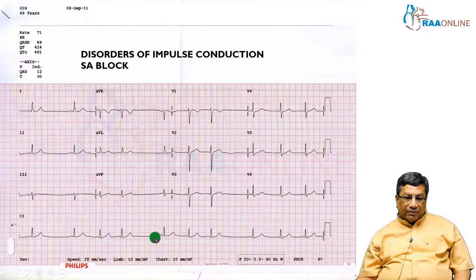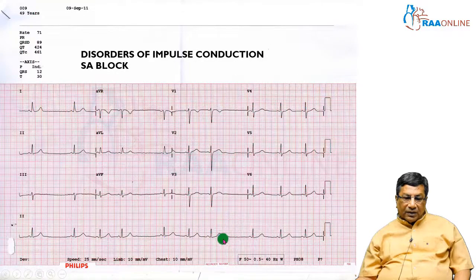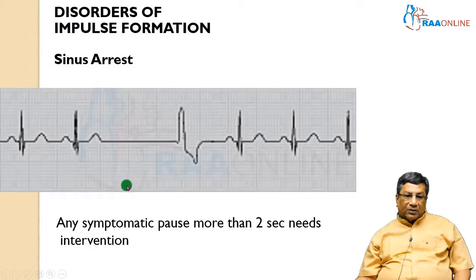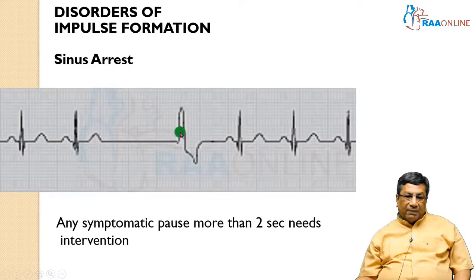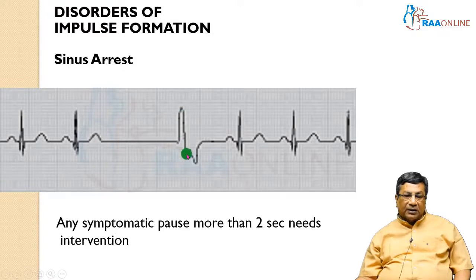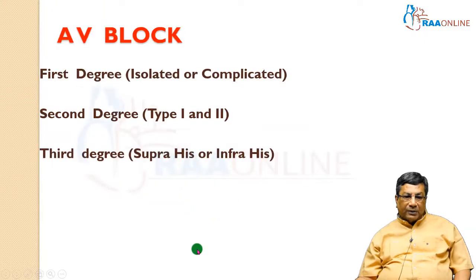You can see the pause here, and inside the pause you don't have any P waves, so this is likely to be a sinus pause. The sinus pause can be terminated by an escape beat — this escape beat comes as a savior. If an abnormal beat comes after a pause, it is likely to be the escape beat saving the patient from sinus arrest. Any symptomatic sinus pause of more than two seconds may need a pacemaker.